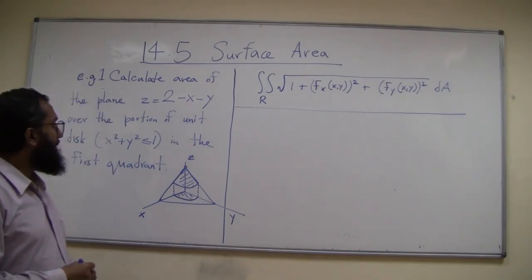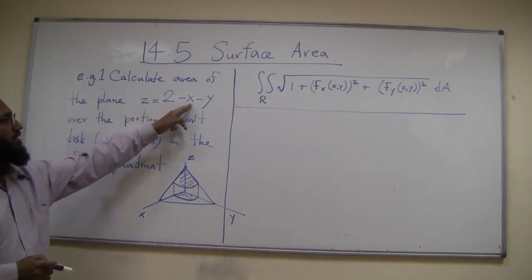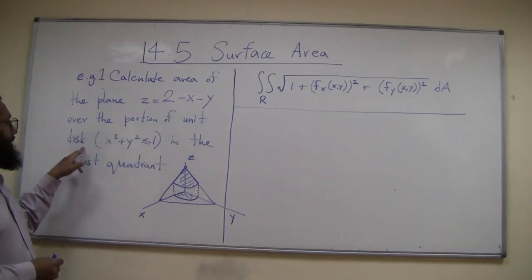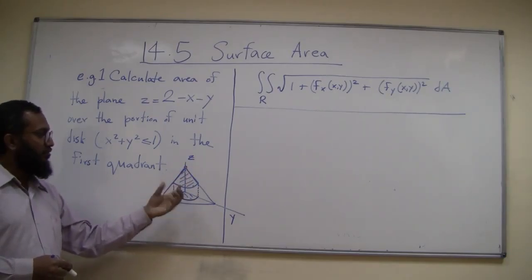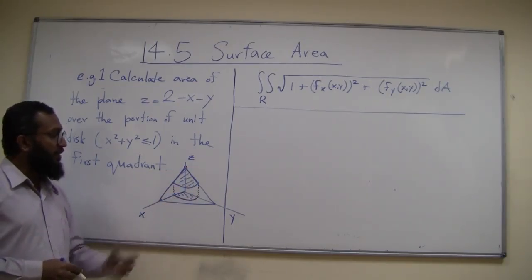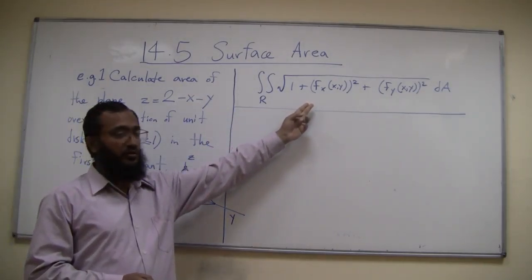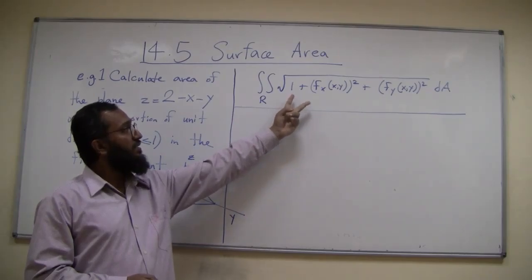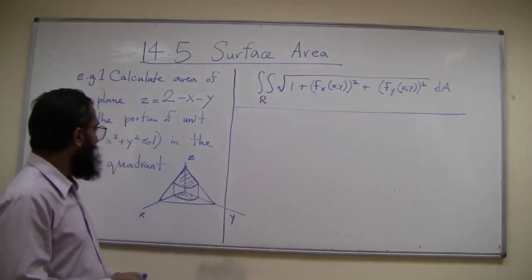Continuing from the last lecture, we had this example: calculate area of the plane z equals 2 minus x minus y over the portion of the unit disc in the first quadrant. We drew this plane and the part above the unit disc portion in the first quadrant. We saw this is the formula we'll use - integrate this quantity over the region to find the surface area. Let's go ahead and do that.